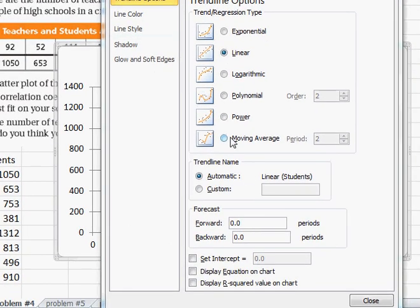You notice here that it shows linear. We're going to display equation on the chart and also display the R squared correlation factor value on the chart as well. Then we simply go close.